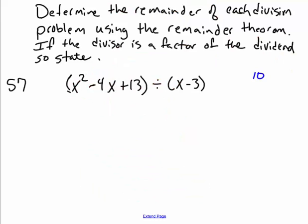Okay, let's cruise along here. Determine the remainder of each division problem using the remainder theorem. Remainder theorem basically says, if the polynomial function p of x is divided by x minus a, then the remainder r is p of a. So remember this x minus a term. This is a binomial, linear binomial, x minus a.